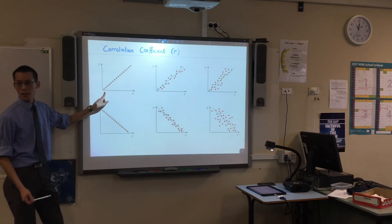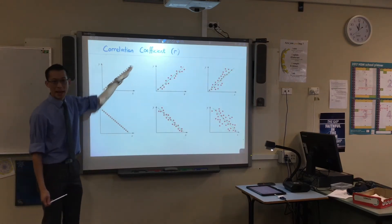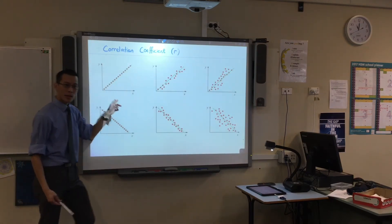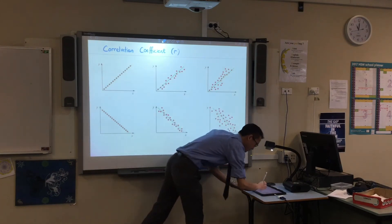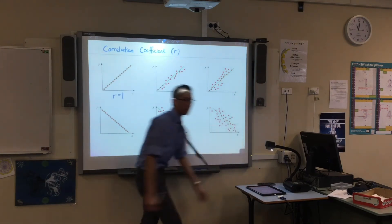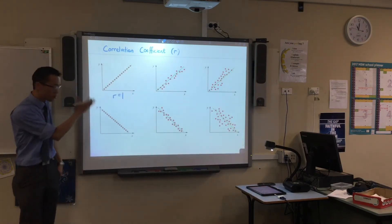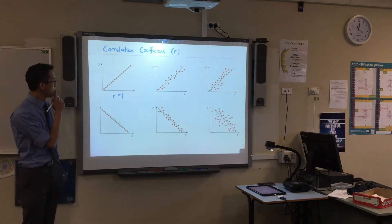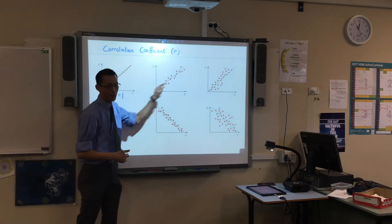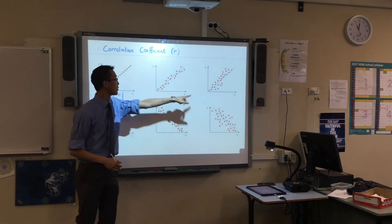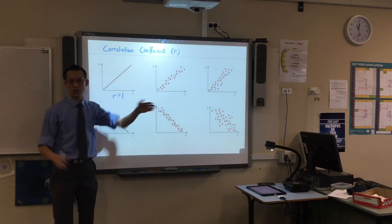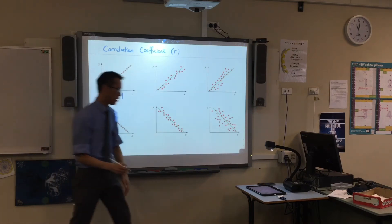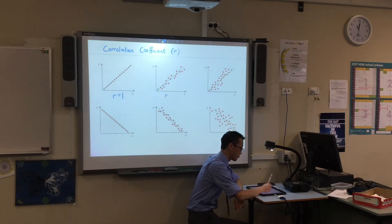So for example, let's go over here. See how everything is bang on the line. This would have a correlation coefficient of 1. That's as close as you can get. This means everything is pretty much on the line of best fit. As you get further and further away from the line of best fit, the correlation coefficient gets smaller and smaller. So for example, this might be 0.6.